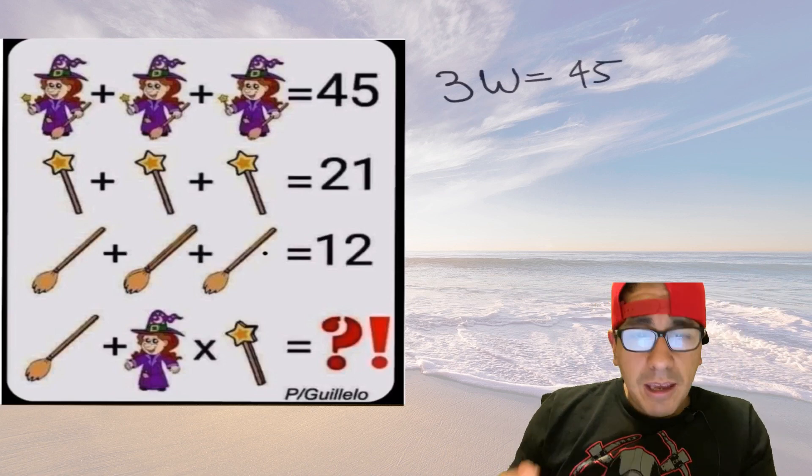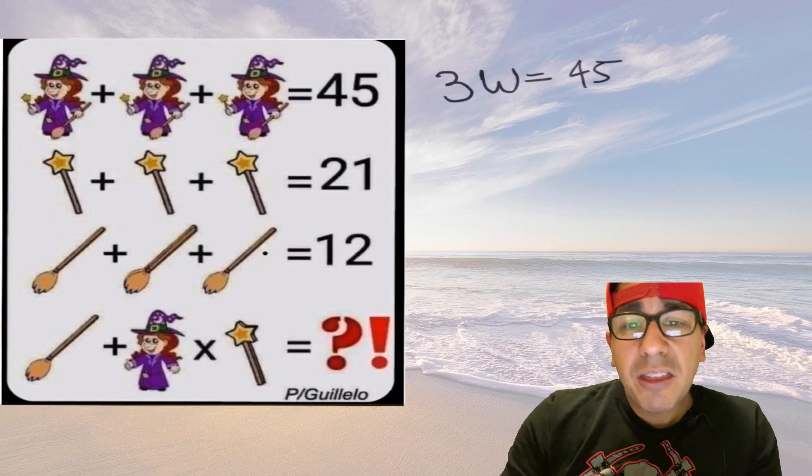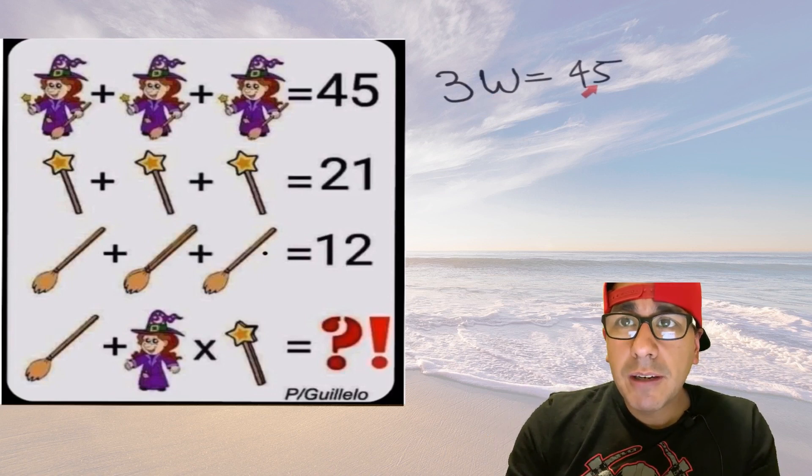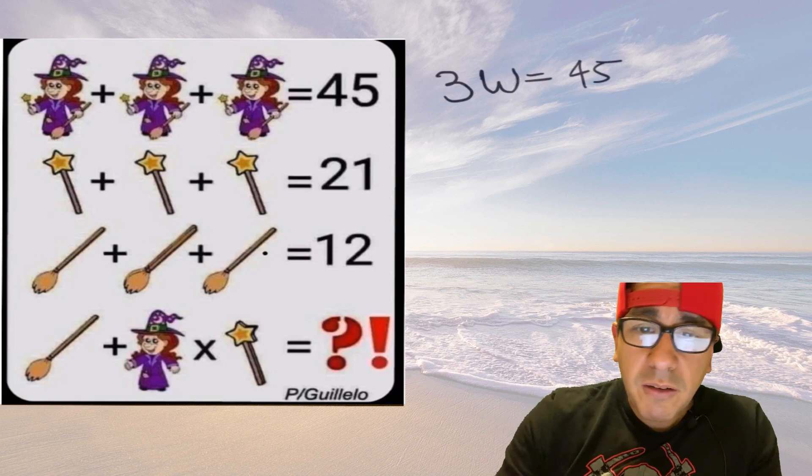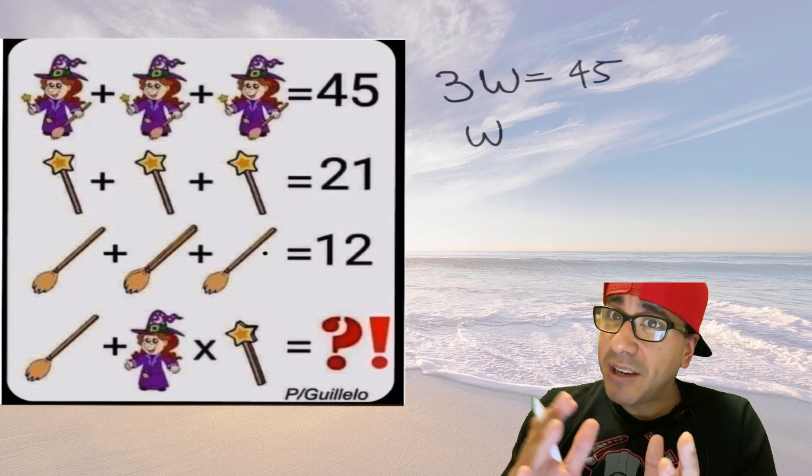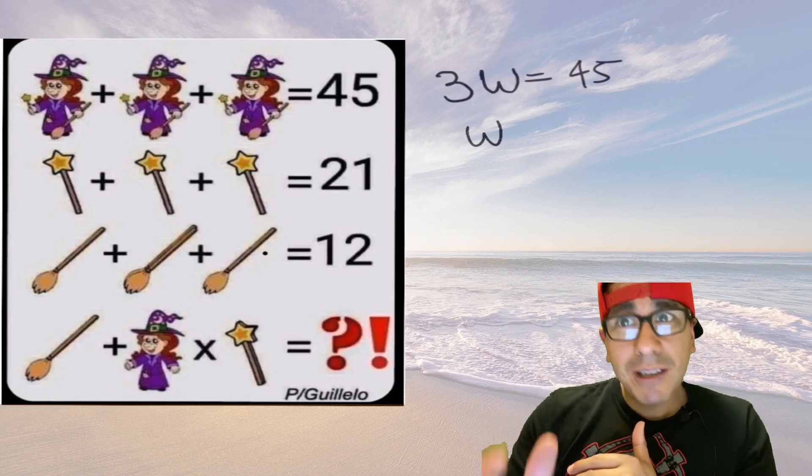Or you could just say three times what number equals 15... well, three times 15... sorry, three times what number equals 45, and the number we're looking for is 15.